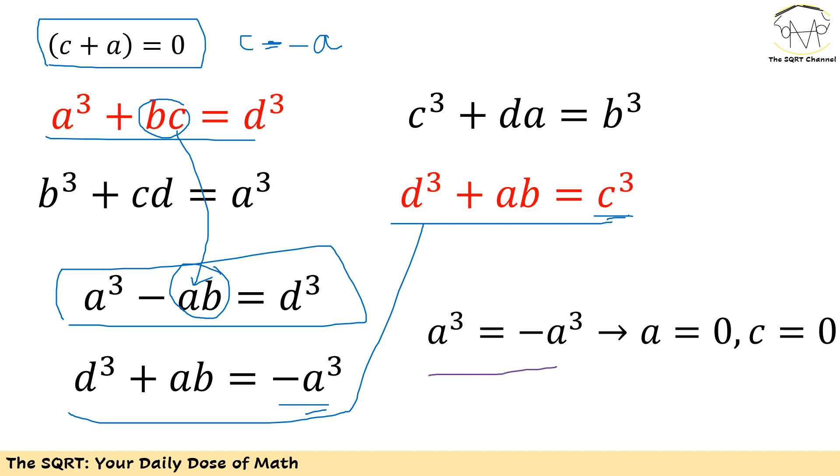There is no other answer since I'm going to have a² + 1 = 0, and we know that a is a real number, so zero is the only answer for a. Since c + a should be zero, c is going to be zero too.